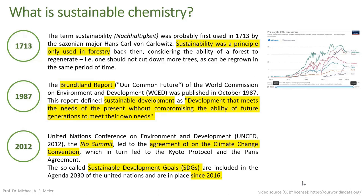Another important milestone was the Rio Summit, where agreement on the necessity of addressing climate change was realized and communicated. That in turn led to the Kyoto Protocol and the Paris Agreement. The Sustainable Development Goals of the United Nations resulted from the Rio Summit and have been heavily communicated since 2016. We are doing something and on the right track, but it's not enough.